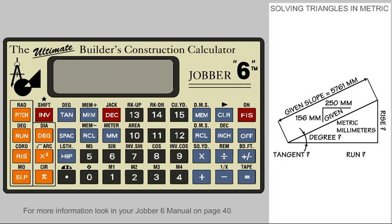Let's say we are solving a triangle that has a given pitch of 156 millimeters to 250 millimeters. We also have a given slope dimension of 5761 millimeters. We want to find the rise and the run dimension.